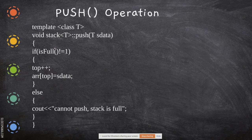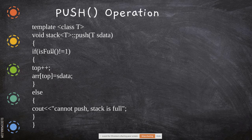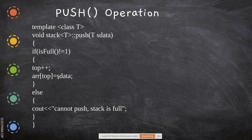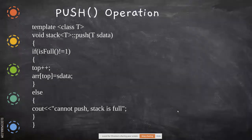In the push code, it checks whether is_full returns 1. Since the condition is 'not equal to 1', if it returns 0 there is space to add. So increment the top pointer and put the data value using array[top] = data, and the value is placed on top of the stack. If the stack is full, the message 'cannot push, stack is full' is given to the user.